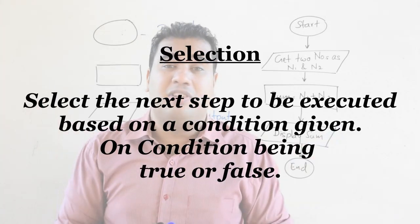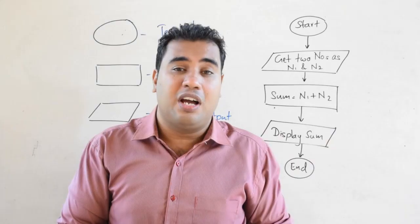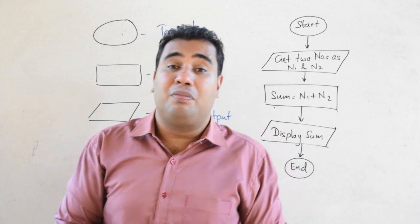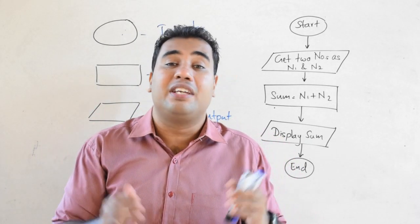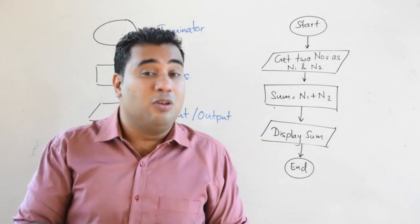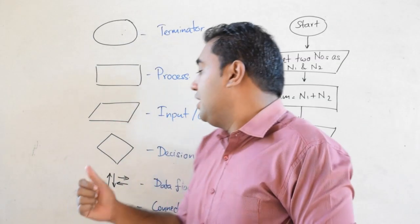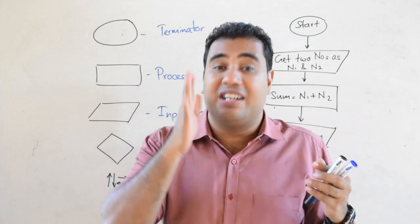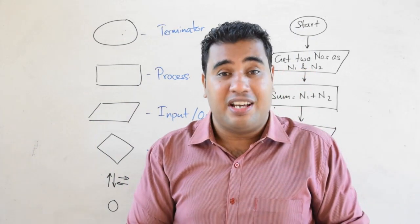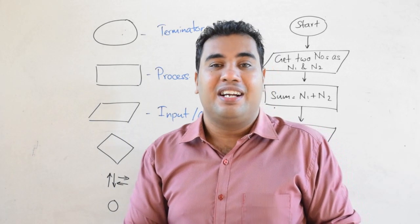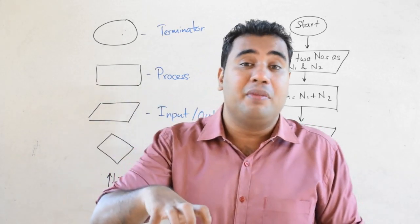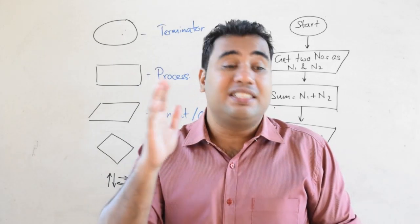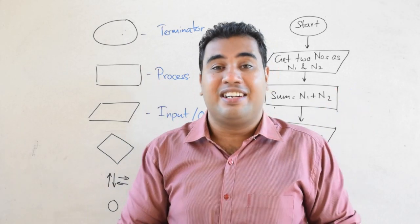The next control structure is selection. In selection, you choose one out of two or more options. In algorithms it is simpler — you get two options. For selection we use the decision symbol, which is why it's called a decision. You make the decision based on a given condition. You decide the next step based on that condition.